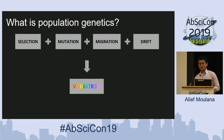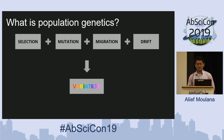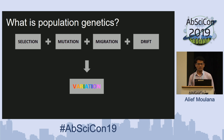Most of this talk is going to be about population genetics. When I think about population genetics, I always think of the four evolutionary forces: selection, which is the necessity; mutation; migration; and drift, which is the chance — and how these interact to give rise to the variation that we see in the population.